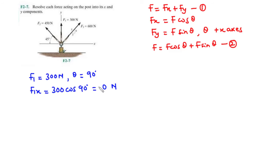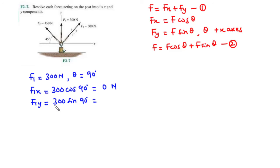Now let's find F1y. F1y equals 300·sin(90°). Since sin(90°) = 1, we have 300 × 1 = 300. So F1y equals 300 N.